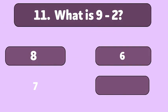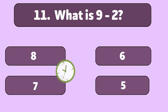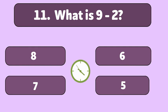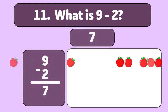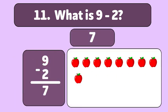What is 9 minus 2? The answer is 7. We start with 9 apples and take away 2. 1, 2, 3. We have 7 apples now.